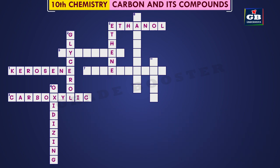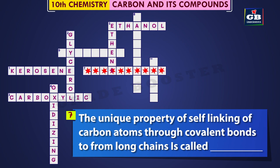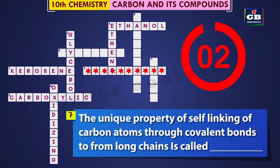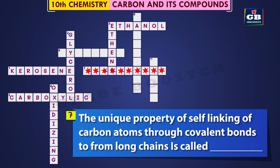7 Across: The unique property of self-linking of carbon atoms through covalent bonds to form long chains is called catenation.